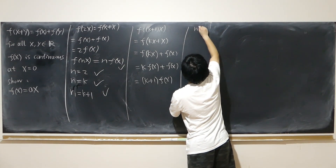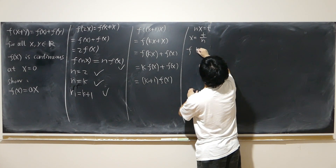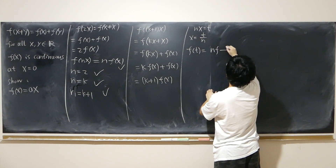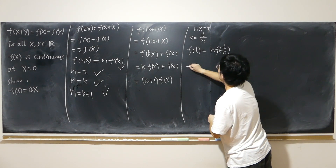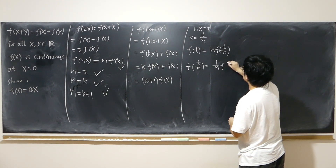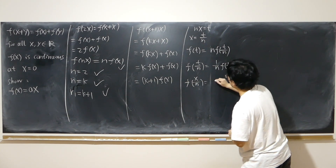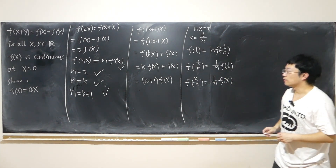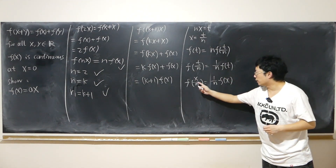If we let nx equal to t, then x equals t over n. Since f of nx equals n times f of x, we have f of t equals n times f of t over n, so f of t over n equals 1 over n times f of t. Replacing t with x, f of x over n equals 1 over n times f of x. So every time we have a positive integer in the denominator, we can multiply it out.